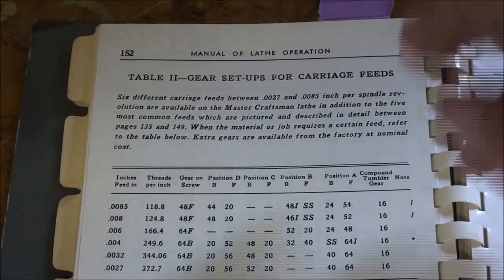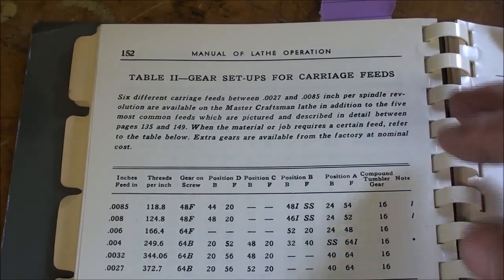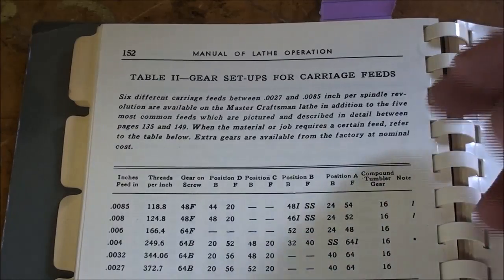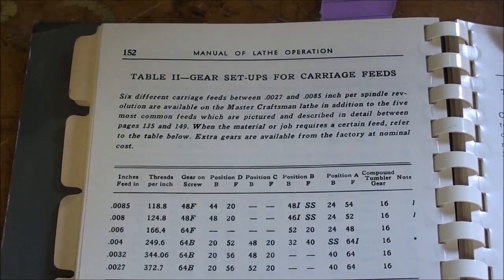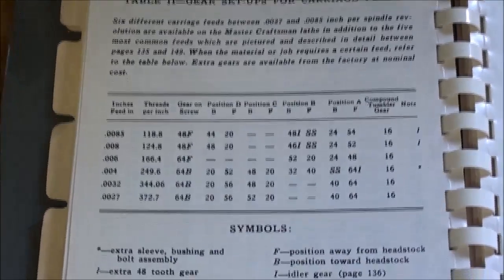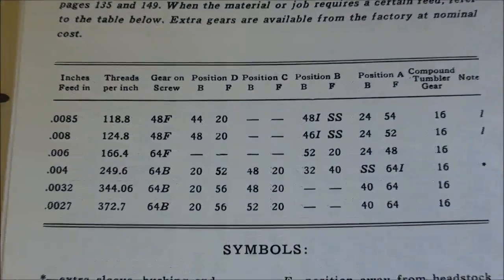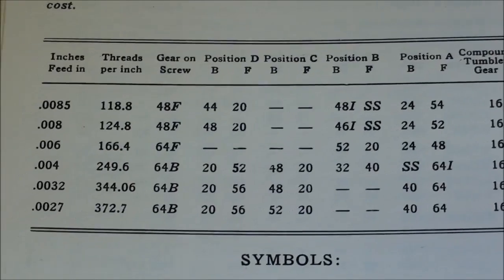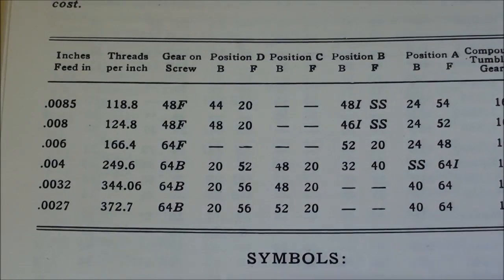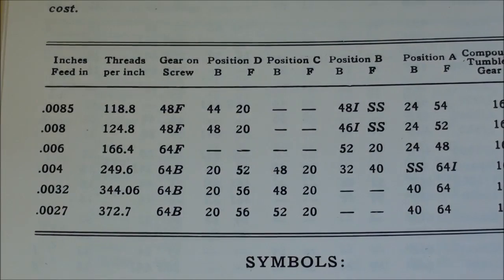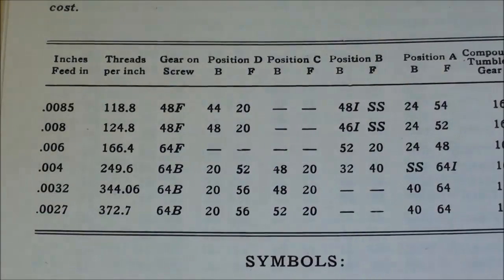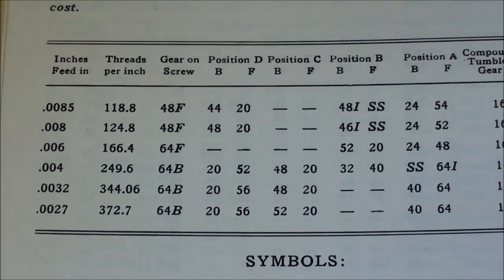In one of the previous videos, you remember that I used the change gears and I set it up without the quick-change gearbox. In fact, we can get finer feeds using the change gears over the quick-change gearbox. The finest one here is 27 ten-thousandths, and that's what I used in that video. But that still is approaching three-thousandths, and still, to my way of thinking, too coarse.